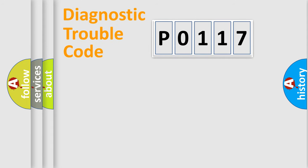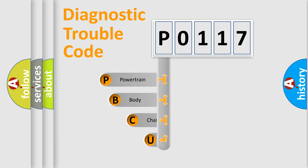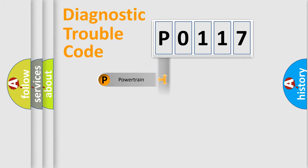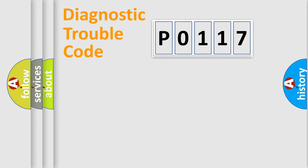Let's do this. First, let's look at the history of diagnostic fault code composition according to the OBD-II protocol, which is unified for all automakers since 2000. We divide the electric system of an automobile into four basic units: Powertrain, Body, Chassis, and Network.